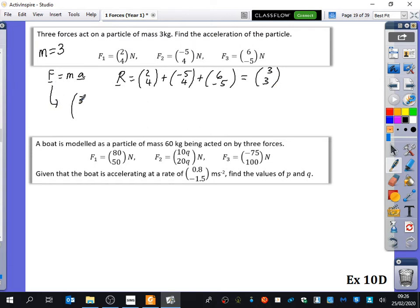(3, 3) equals 3a. So what's the acceleration? One, one. So dividing both sides by three, we get that the acceleration is (1, 1). And it's going to be meters per second squared. The question didn't ask for the magnitude, so you don't need to give the magnitude.